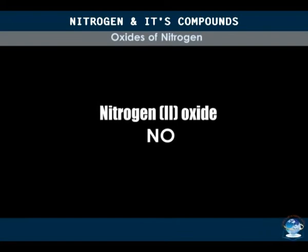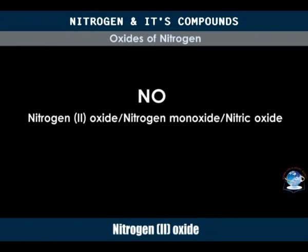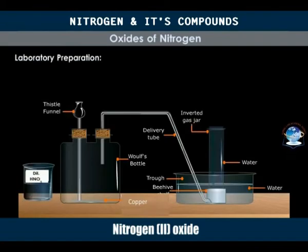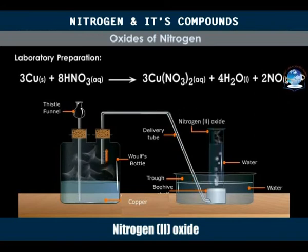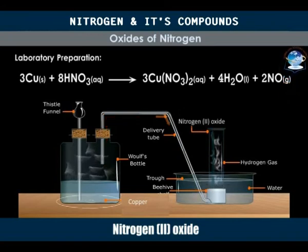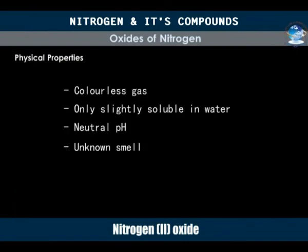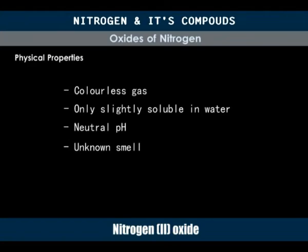Nitrogen-2 oxide, also called nitrogen monoxide or nitric oxide, is usually prepared by the action of moderately concentrated nitric acid on copper turnings. Effervescence is observed as nitric acid reacts with the copper turnings, forming nitrogen-2 oxide. Physically, nitrogen-2 oxide is a colorless gas. It is only slightly soluble in water, forming a neutral solution. Its smell is unknown, since on exposure to air it combines instantly with oxygen, producing brown fumes of nitrogen-4 oxide.